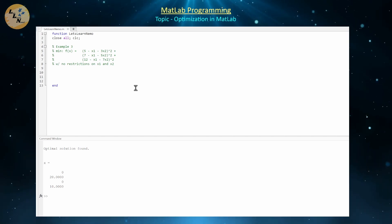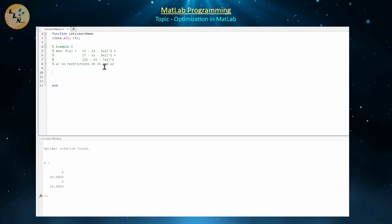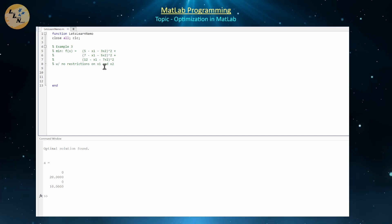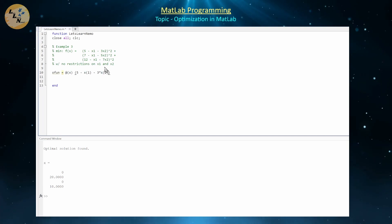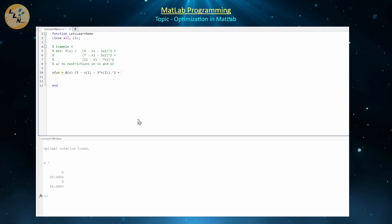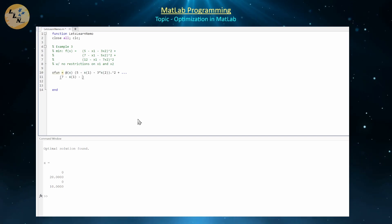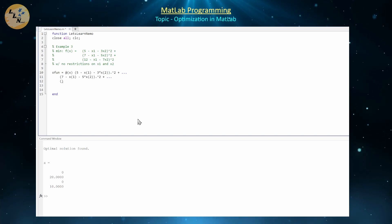Since we can't use a linear programming tool, we use a more general tool that numerically solves non-linear programs. We define the objective function as an anonymous function of x: ofun = @(x) (5 − x(1) − 3*x(2)).^2 + (7 − x(1) − 5*x(2)).^2 + (12 − x(1) − 7*x(2)).^2. Note the use of dot-exponentiation because x1 and x2 are vectors.